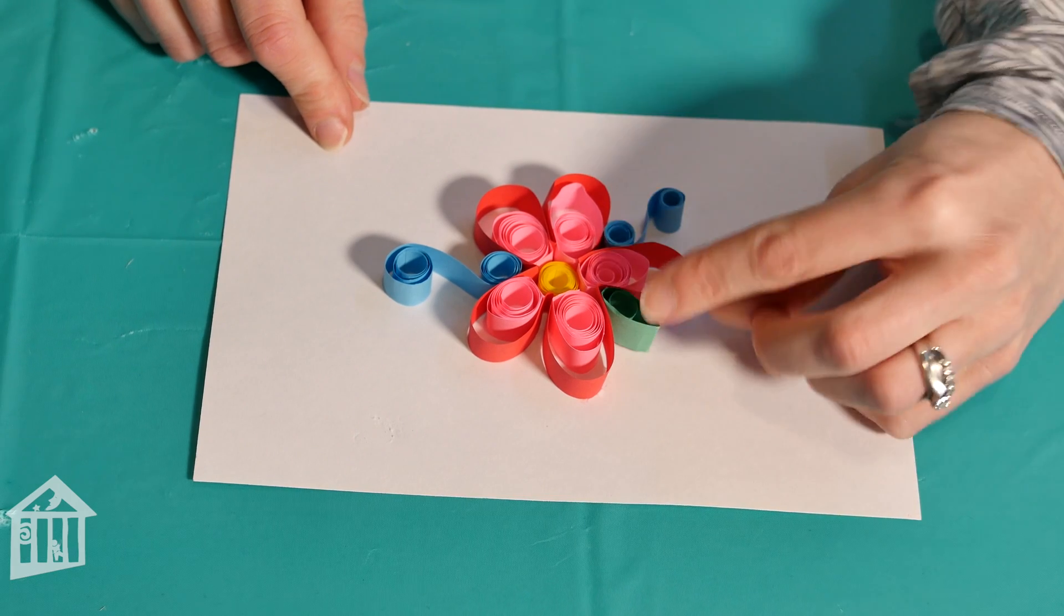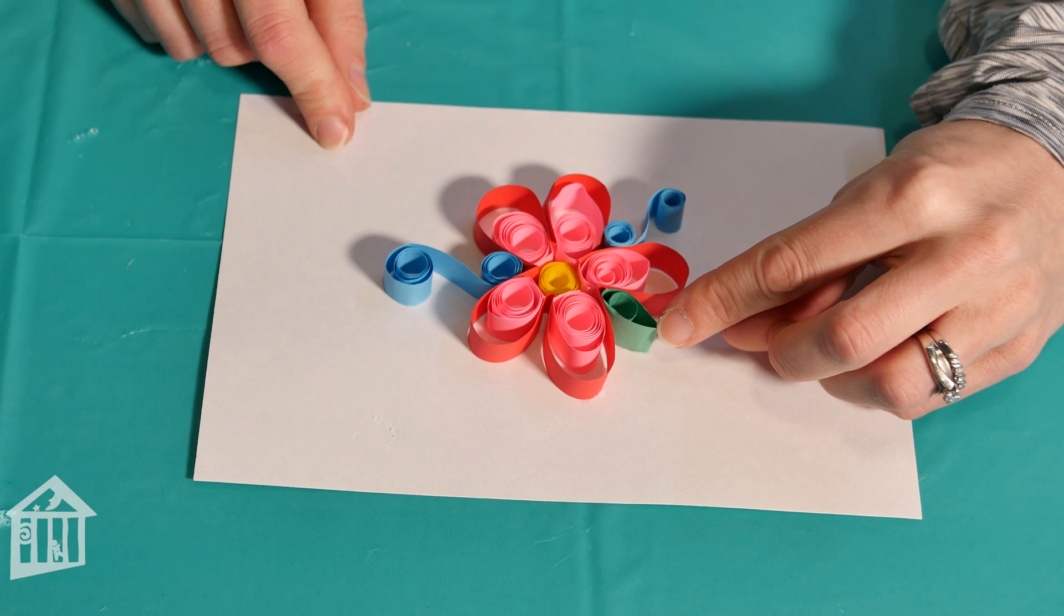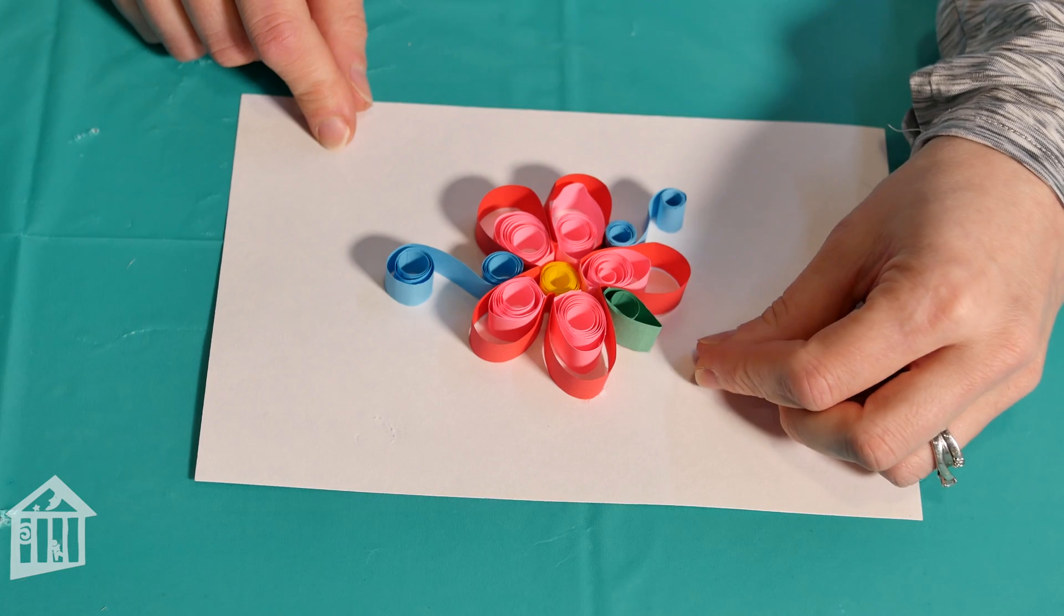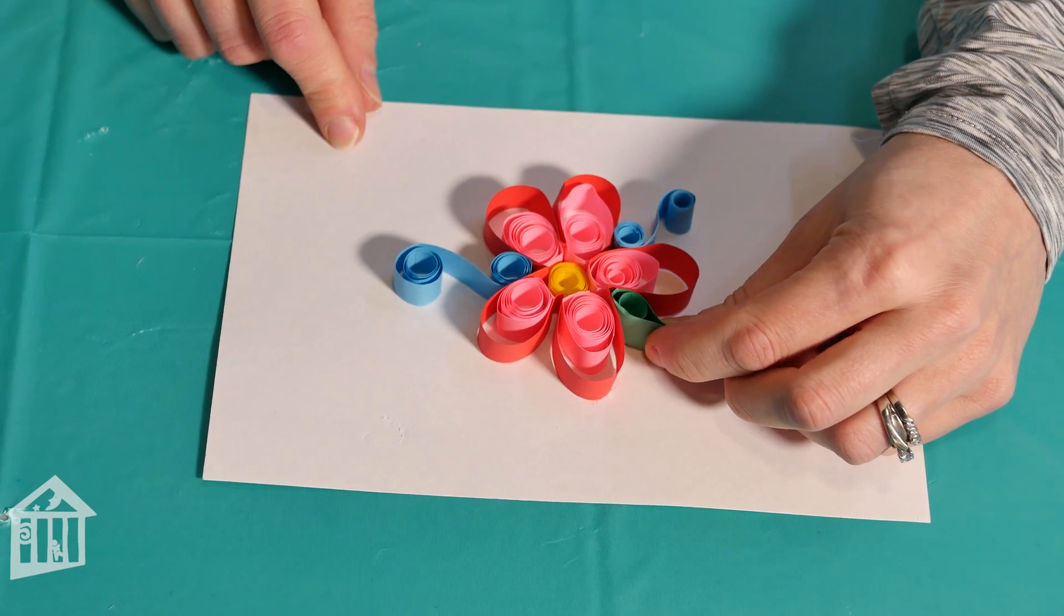For my last detail I added a little leaf which is just the same as how we started with making one tight coil and then pinching off one end to give it that leafy look.